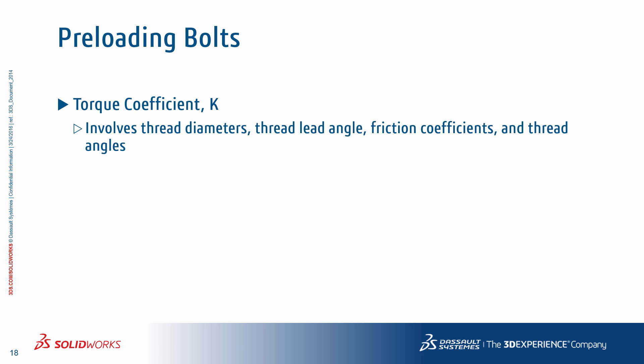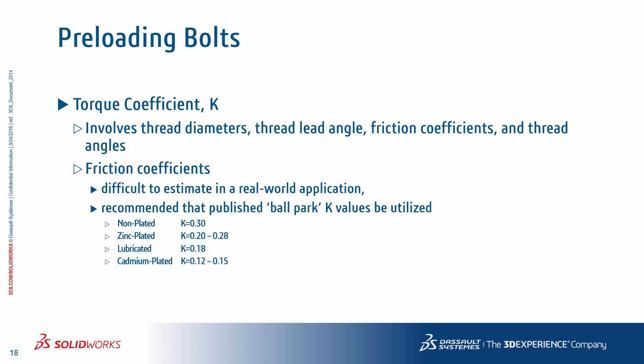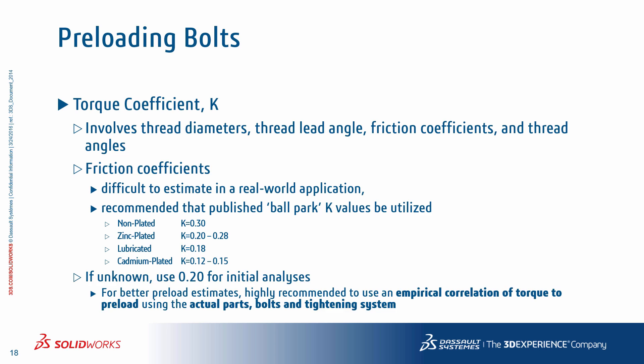A little about the torque coefficient K: it involves a calculation using diameters, thread angles (which are lead angles), friction between the threads, and a number of different aspects of the fastener itself. Friction is a big part of the calculation of K and is going to vary greatly in real-world applications and can at times be unpredictable. Our recommendation is to stick with well-published, well-documented K values and then adjust those values based on testing. If you don't have any better information on your designs, choose K as 0.2 — that's usually recommended — and don't deviate from this value unless you have better knowledge of what's happening inside the bolt.